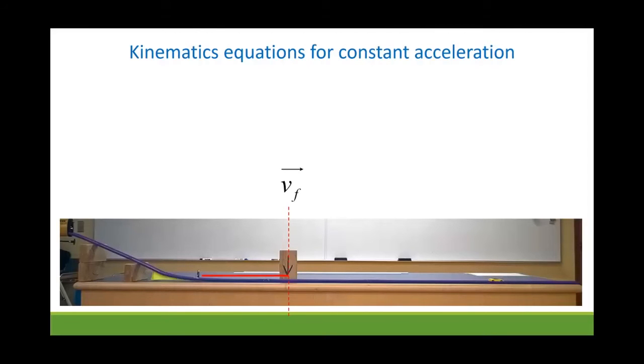So perhaps we could deal with the section from where it first reaches the tabletop to where it reaches our marked point, in which case we're looking for the final velocity of that motion. Or we could look at the motion from that point onwards, from where it passes the block until the car comes to a stop, in which case we're looking for the initial velocity. Which one should we use?